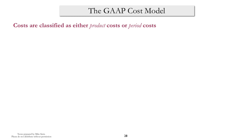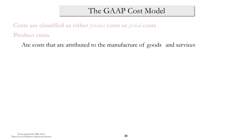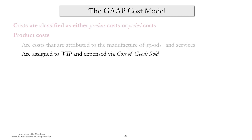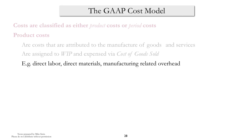This is due to the requirement for matching. Product costs really are all those costs that are directly related to the manufacture of the company's goods and services. These costs are assigned to work in process, then they go into finished goods, and eventually get expensed as cost of goods sold. Examples would be direct labor, direct materials, manufacturing overhead, etc.